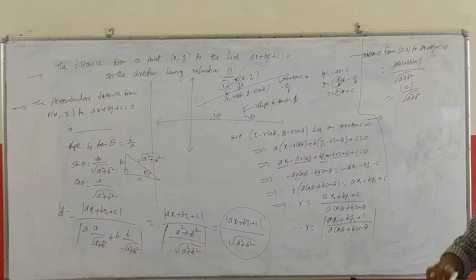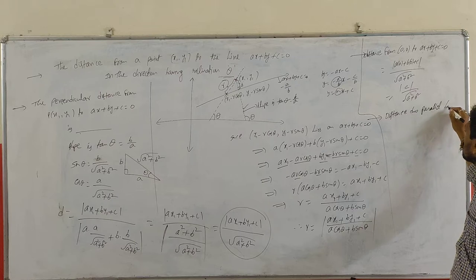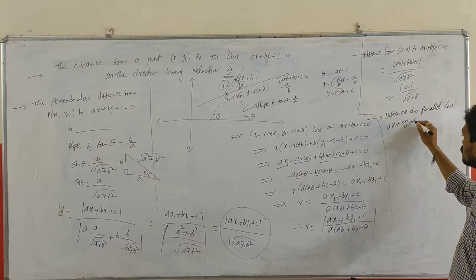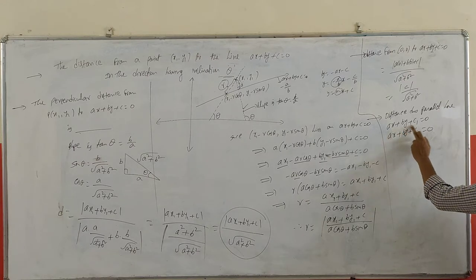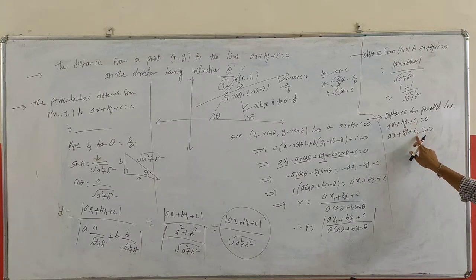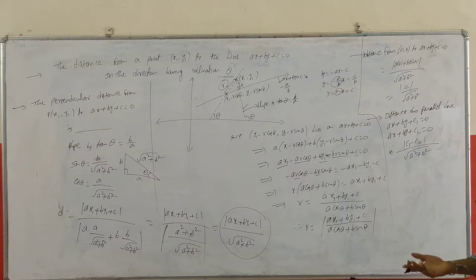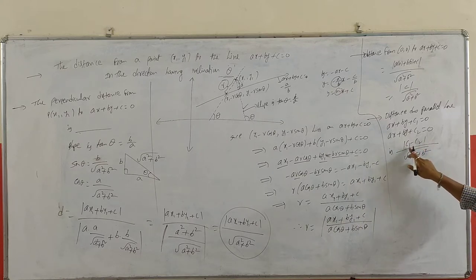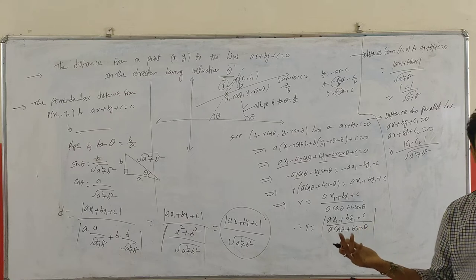Next concept: the distance between two parallel lines Ax + By + C1 = 0 and Ax + By + C2 = 0. Parallel lines differ only in their constants. The formula is |C1 − C2| / √(A²+B²). We keep the modulus because we do not know whether C1−C2 or C2−C1 is positive. You can write either |C1−C2| or |C2−C1| — both are valid.